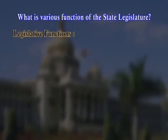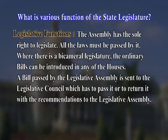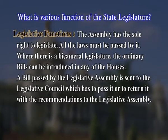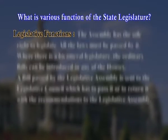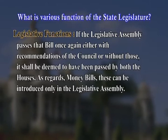What are the various functions of the state legislature? The first important function is the legislative function. The assembly has the sole right to legislate; all laws must be passed by it. Where there is a bicameral legislature, an ordinary bill can be introduced in any of the houses. A bill passed by the legislative assembly is sent to the legislative council, which has to pass it or return it with recommendations to the legislative assembly. If the legislative assembly passes that bill again, either with or without the recommendations of the council, it shall be deemed to have been passed by both houses.